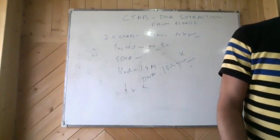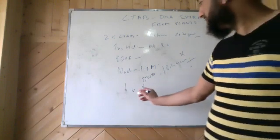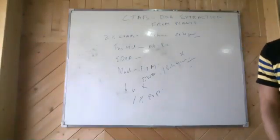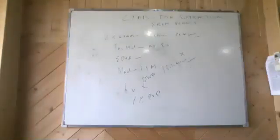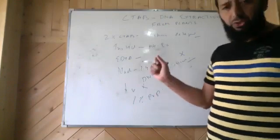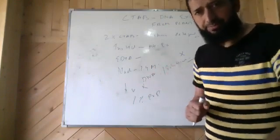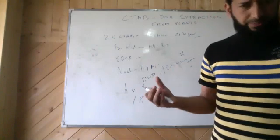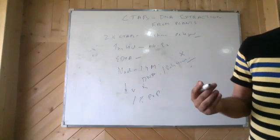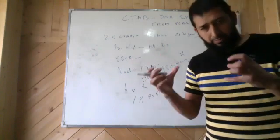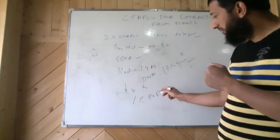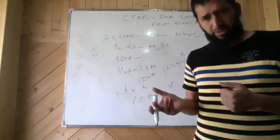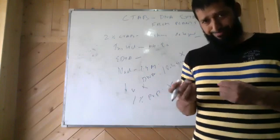Plus we use 1% PVP, polyvinylpyrrolidone. What happens is once you grind tissue samples of the plants, you grind the leaves, your phenols also come out. And these phenolic compounds, they can bind to the DNA molecules. So this PVP prevents that binding so that our phenols do not bind to the DNA. Later, these phenols turn into quinones in presence of oxygen due to which your DNA turns brown.